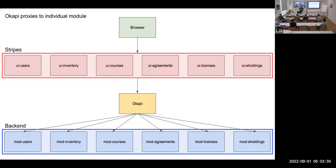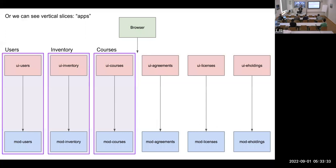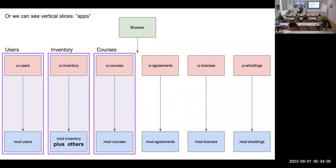This is how developers think about it — in horizontal layers. But users think of it in a completely different way: vertical slices that constitute applications. For many users at this conference, they don't know or care about UI modules; that's just the users application and the inventory application and the courses application. Although for simplicity I've drawn it as though there's a one-to-one correspondence between UI modules and back end modules, in reality it's often more complex than that.